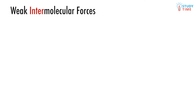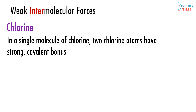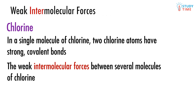Let's take a look at molecular solids first, as these will be the most familiar to you. A molecular solid is, perhaps you've guessed it, a solid composed entirely of molecules. Molecules in the way we refer to them here are either non-polar or only slightly polar. Often they'll be composed of more than one of the same type of atom. Let's take chlorine for example. In a single molecule of chlorine, two chlorine atoms have strong covalent bonds. But we care about the weak intermolecular forces between several molecules of chlorine — these are very weak, just like they were in water.